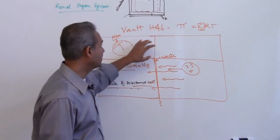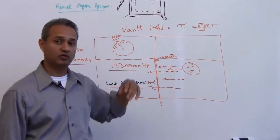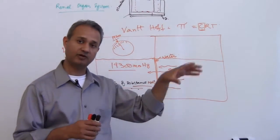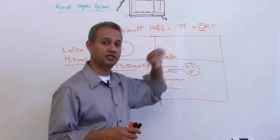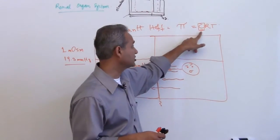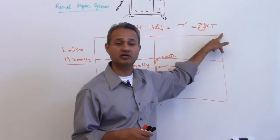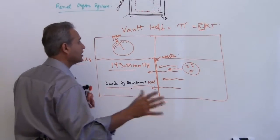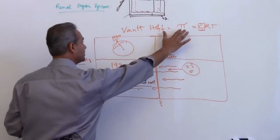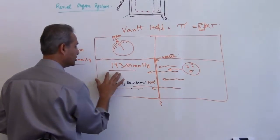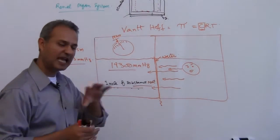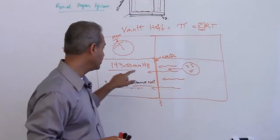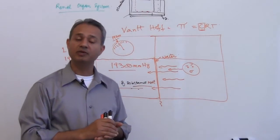How did we calculate that? That is dictated by Vanthoff's formula: osmotic pressure equals CRT, where C is the concentration of the particle, R is a gas constant, and T is the temperature. If you resolve this formula, you see that one mole of any substance would exert 19,300 millimeter of mercury.